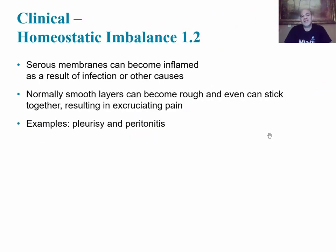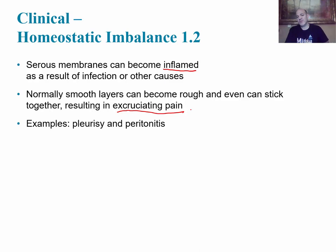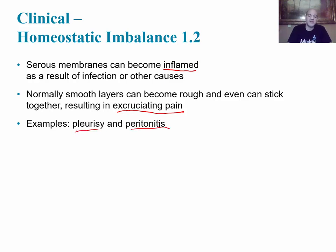Another homeostatic imbalance: serous membranes can become inflamed from infection or irritation, causing pain. When inflamed, the normally smooth membranes become rough and can stick together, causing severe pain. Examples include pleurisy, which is inflammation in the pleura of the pleural cavity where the lungs are, and peritonitis, which is inflammation in the peritoneal cavity where the abdominal organs are.